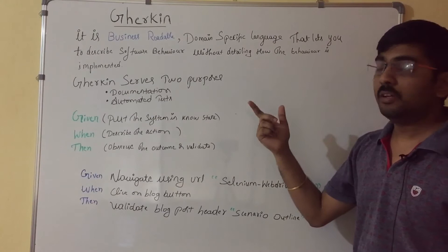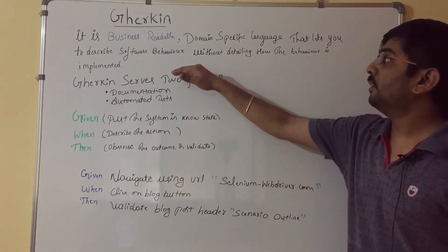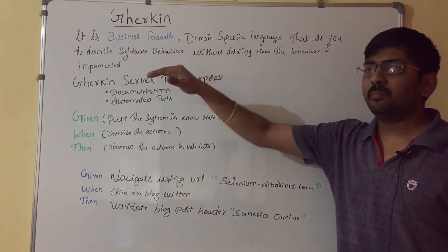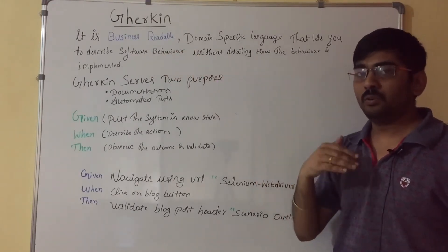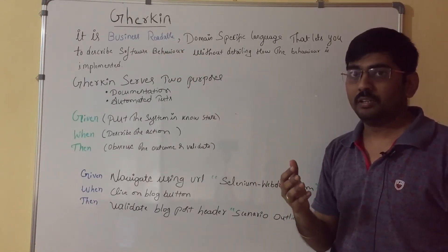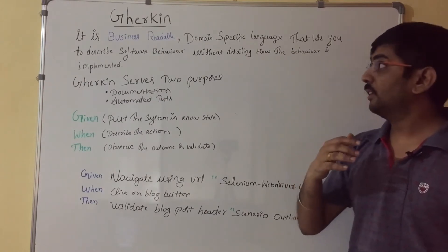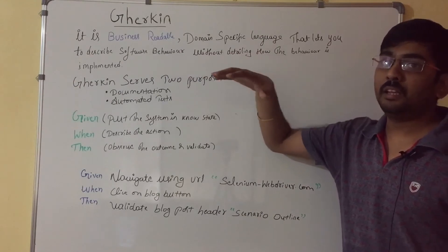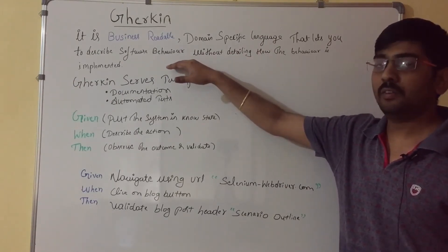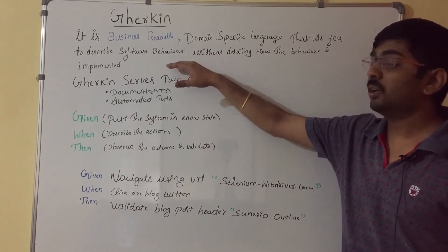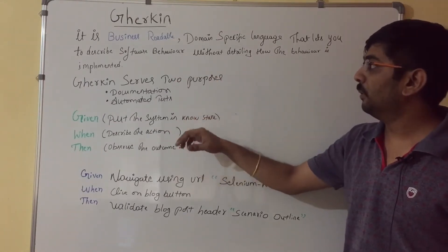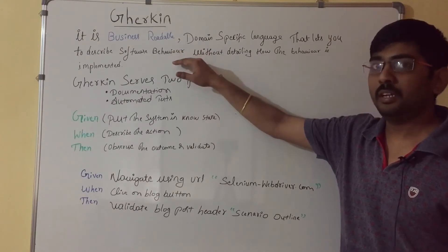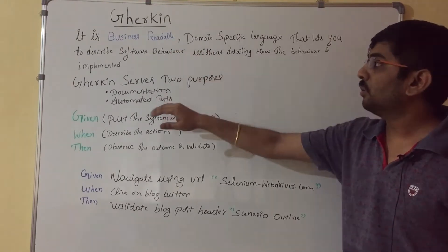What does this exactly mean? We have a business or a product owner who does not have full technical knowledge. So what they do is write acceptance criteria in simple plain English that everyone can understand. We are going to write the acceptance criteria using the Gherkin format.